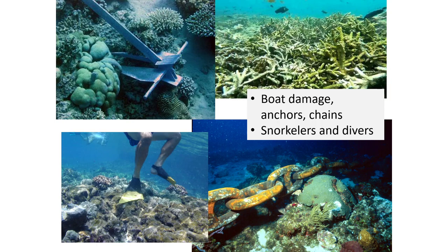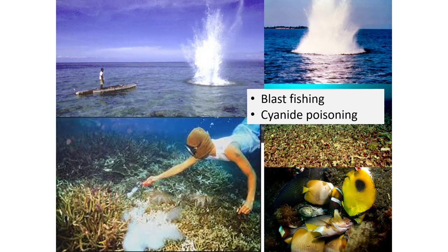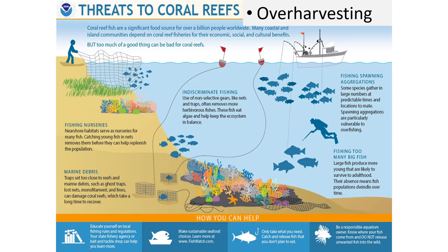These are human impacts on coral reefs. You can see boat damage from anchors and chains. Snorkelers — if you ever go snorkeling in a coral reef, they'll always tell you please do not touch anything, because just touching it can contaminate it and harm that coral. There is also blast fishing and cyanide poisoning that are all human-caused. When we look at other threats, we see over-harvesting, since it is a major food source.